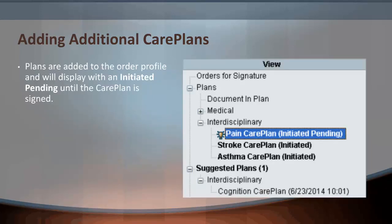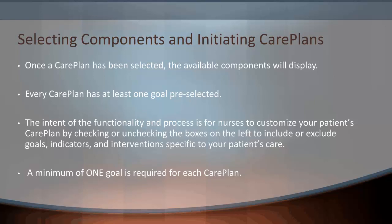Plans are added to the order profile and will display with an Initiated Pending status until the care plan is signed. Once a care plan has been selected, the available components will then display. Every care plan has at least one goal that is pre-selected. The intent of the functionality and process is for nurses to customize the patient's care plan by checking or unchecking the boxes on the left to include or exclude goals, indicators, and interventions specific to the patient's care needs.